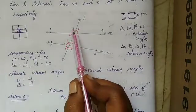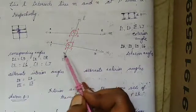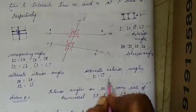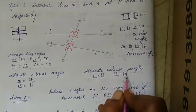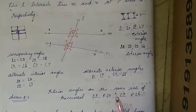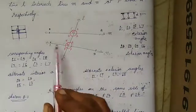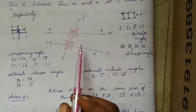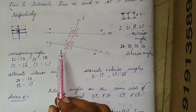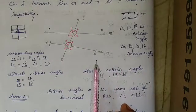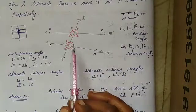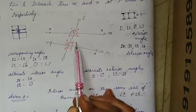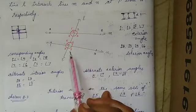Alternate exterior angles also exist. The exterior angles are 1, 2, 8, and 7. The opposite exterior pairs are: angle 1 is equal to angle 7, and angle 2 is equal to angle 8. These are alternate exterior angles. To summarize: exterior angles are 1, 2, 8, 7; interior angles are 4, 3, 5, 6; corresponding pairs are 1–5, 2–6, 4–8, 3–7.